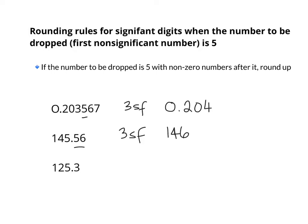125.3 — if we want to round this to 2 significant digits, the first number to be dropped is a 5, so we round the previous number up, so the 2 would become a 3. But don't forget, you cannot change the value of your number — I can't make 125 into 13, so you need a placeholder to keep the magnitude of the number. So we have 2 significant digits, and the 0 in this case is a placeholder because there's no decimal. This follows your previous knowledge of rounding with 5s.